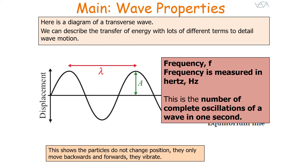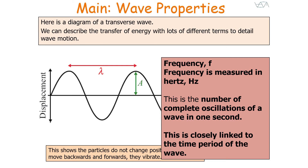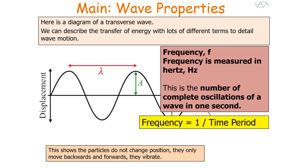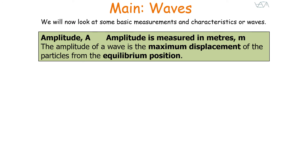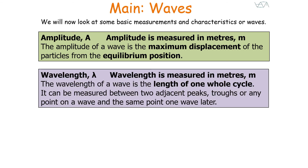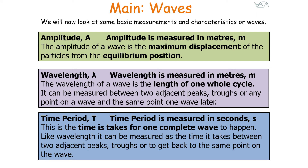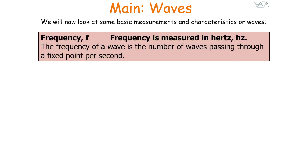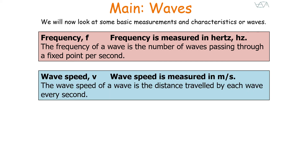Frequency, measured in hertz, is the number of complete oscillations of a wave in one second, and is closely linked to the time period: frequency equals one over the time period. Amplitude is the maximum displacement from the equilibrium position. Wavelength λ is the length of one whole wave cycle, measurable between two adjacent peaks, troughs, or any equivalent points on consecutive waves. Time period T is the time for one complete wave. Wave speed V, measured in metres per second, is the distance travelled by each wave every second — the speed at which energy is transferred by a wave.